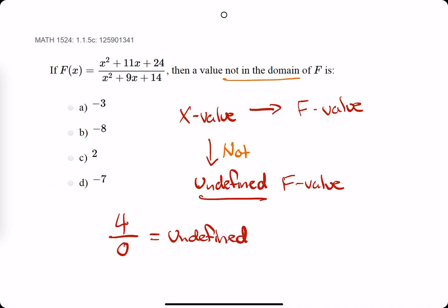So for this entire function, this entire quotient, to be undefined at some point, we need the denominator to be equal to 0. If we get this whole function, x squared plus 11x plus 24, divided by 0, we'll get undefined. So we just need to find out what x values make the denominator equal to 0.